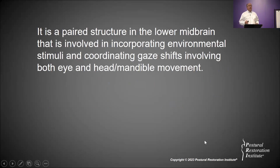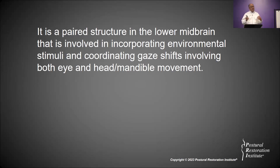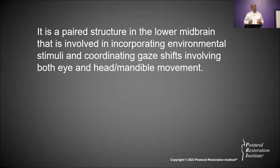It is a paired structure in the lower midbrain involved in incorporating environmental stimuli and coordinating gaze shifts involving both eye and head and mandibular movement. When you say the word 'shift,' you have to think about the colliculus — its number one purpose is to ensure paired bilateral shifting with stimuli being received and processed. At the beginning of this webinar I'll speak more to neurology, which needs to be broken down so we have a better understanding of the physical componentry behind the operation of your eyes when you turn them and your mandible when you turn it.